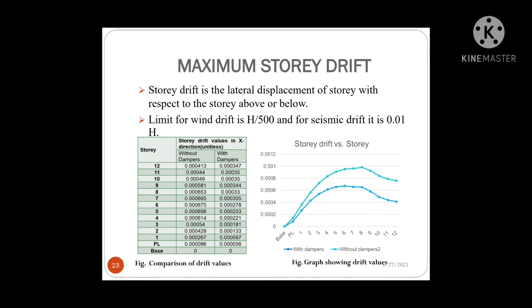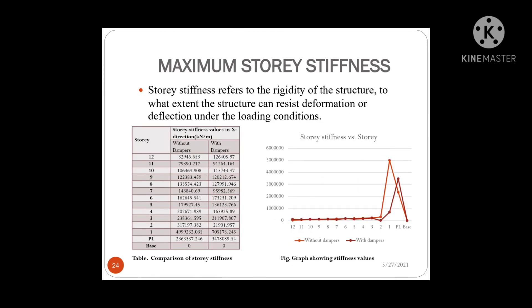The next parameter for comparison is storey drift, defined as the lateral displacement of a storey with respect to the storey above or below. Drift is a unitless number resulting from dividing the relative lateral displacement. The usual limit for wind drift is h/500 while for seismic drift it is 0.01h. The application of viscous dampers assists in the reduction of drift values. The final parameter is storey stiffness, which refers to the rigidity of the structure — to what extent it can resist deformation under loading. Application of dampers increases the storey stiffness.